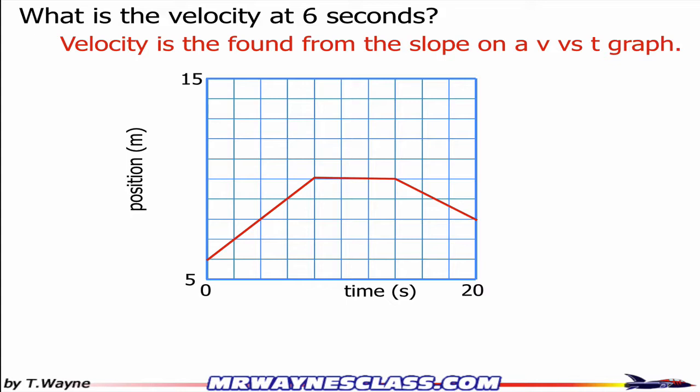And if I find 6 seconds, see where it goes up, I can see where it crosses the line, and it crosses a straight line. The thing about the straight line is that the slope at 6 seconds is the same as the slope anywhere along this line.